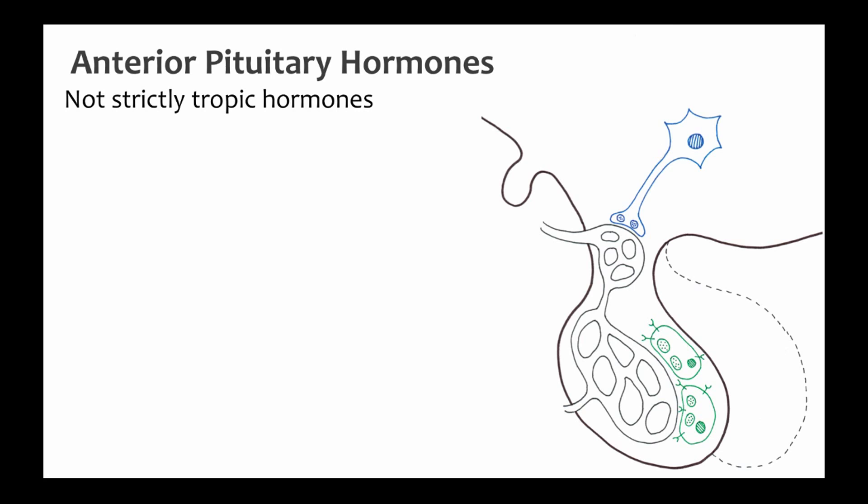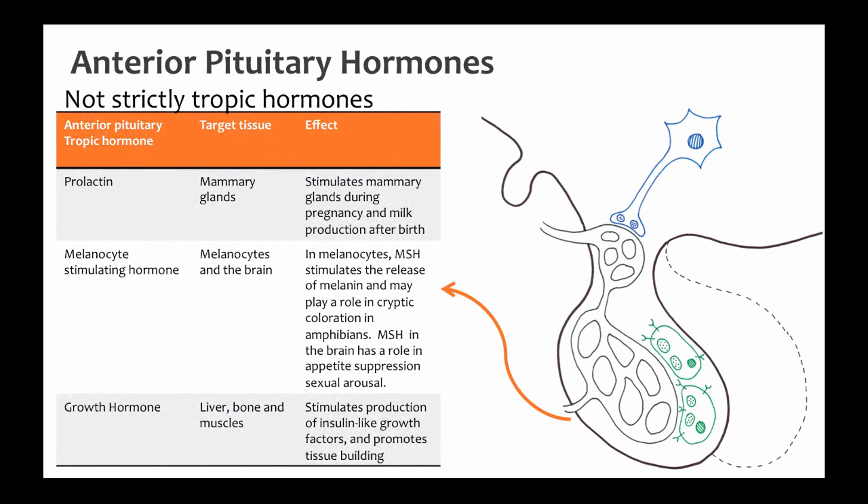Not all anterior pituitary hormones are tropic hormones — some have non-endocrine targets. For example, prolactin stimulates milk production in mammals, and growth hormone has both endocrine and non-endocrine target cells.